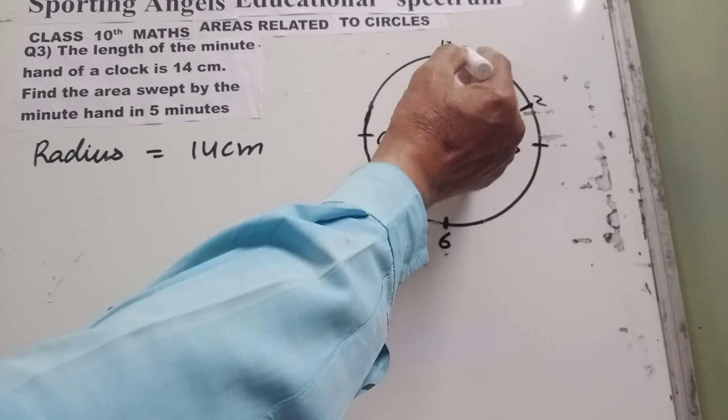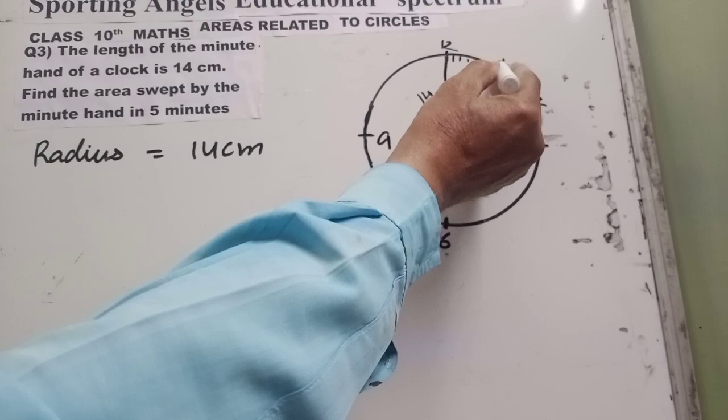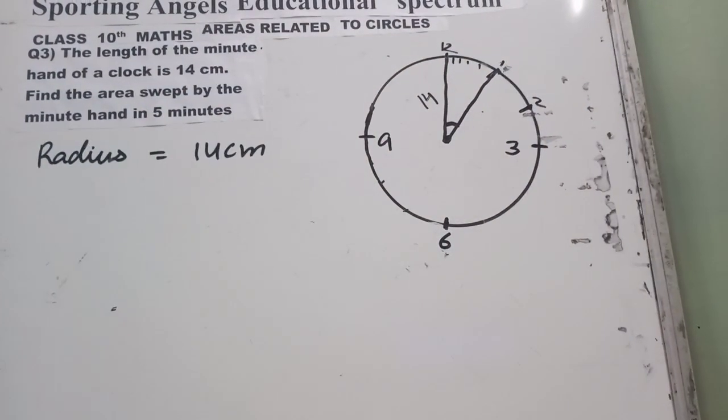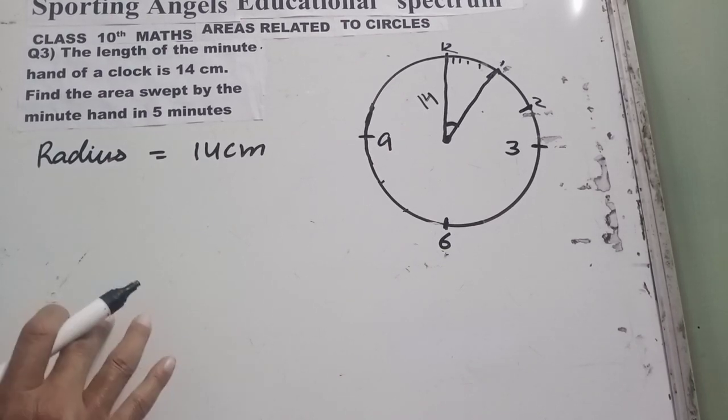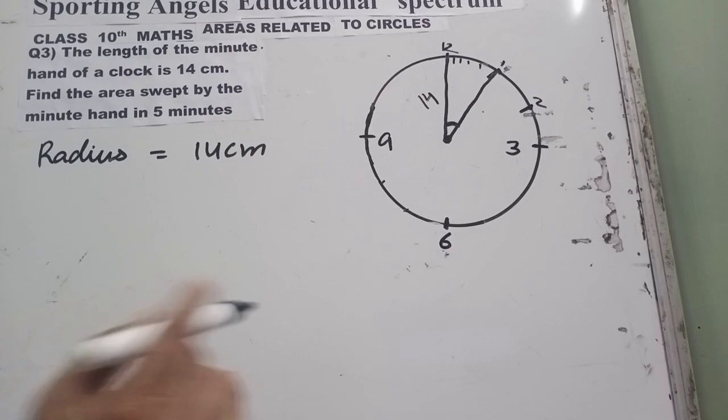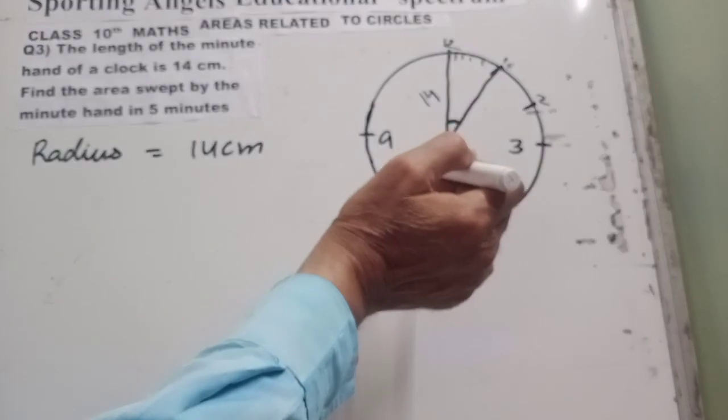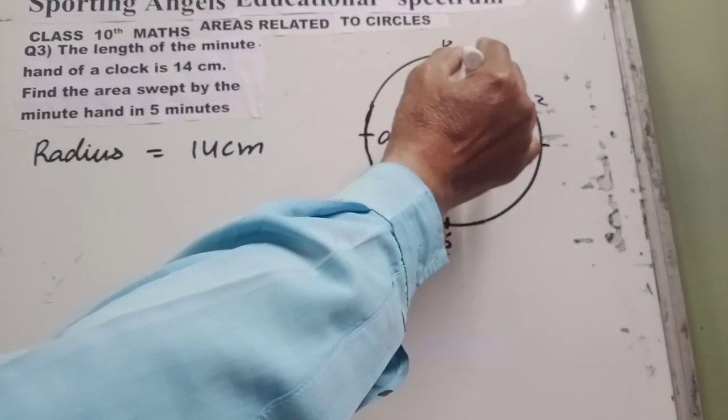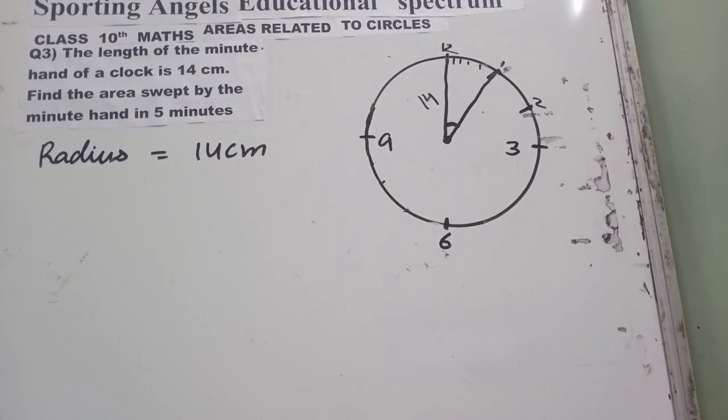From here to here, we have 5 minutes: 1, 2, 3, 4, and 5. So 1 minute mein kitna angle banaya? That is what you should know. This complete angle is 360, and it takes 60 minutes to make one complete revolution for the minute hand. 60 minutes, 360 degree. So for moving 5 minutes, how much is the angle?